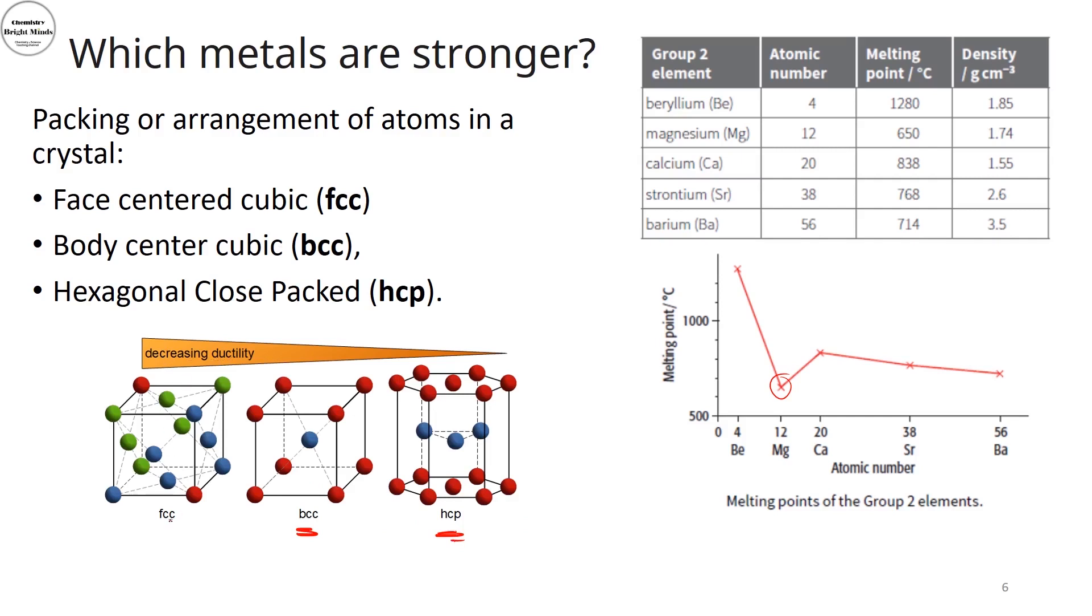The ductility is actually decreased from the FCC to the BCC. And I have the HCP is actually brittle. And now, you could see that in here, if I'm decreasing the ductility, I'm also decreasing the melting points.